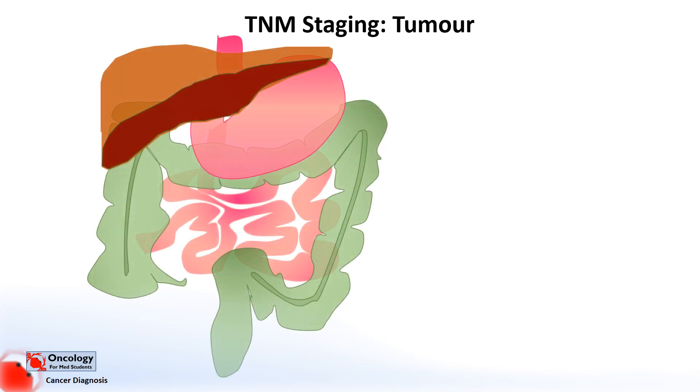So firstly, I'll start off with the T in the TNM stage, which stands for tumor, and I'll use the example of bowel cancer. Here we can see some of the abdominal organs with the liver and stomach at the top, the small bowel in the middle, and around it in green, the large bowel, which is also known as the colon. Unfortunately, in this colon, there's a tumor present.